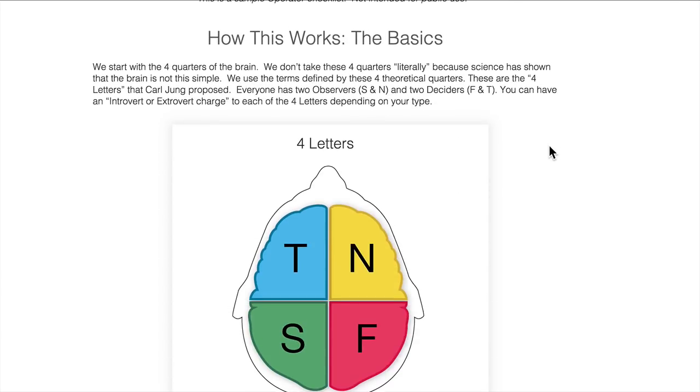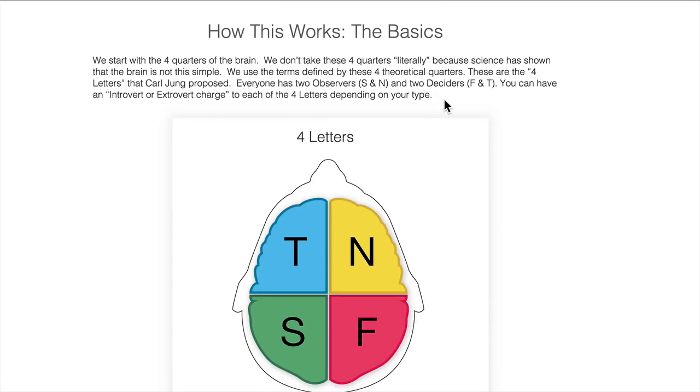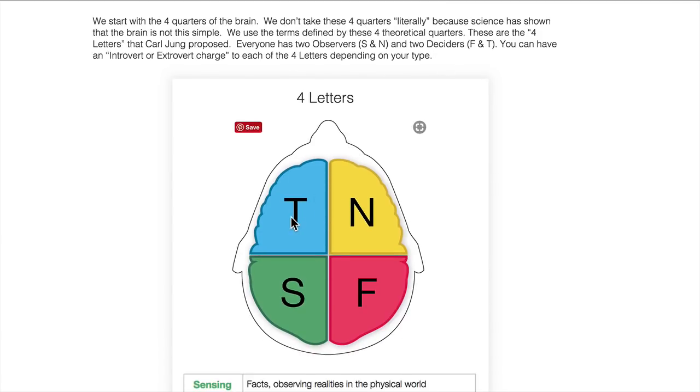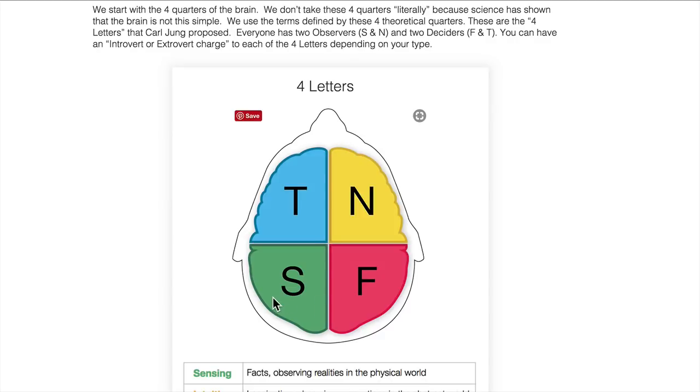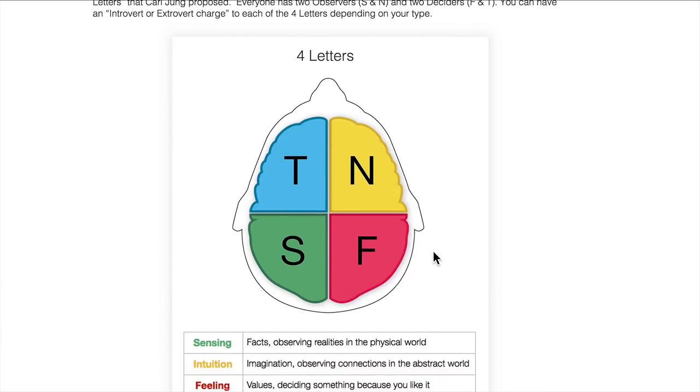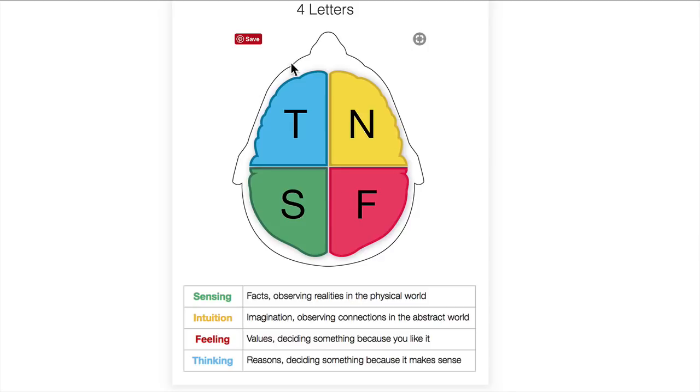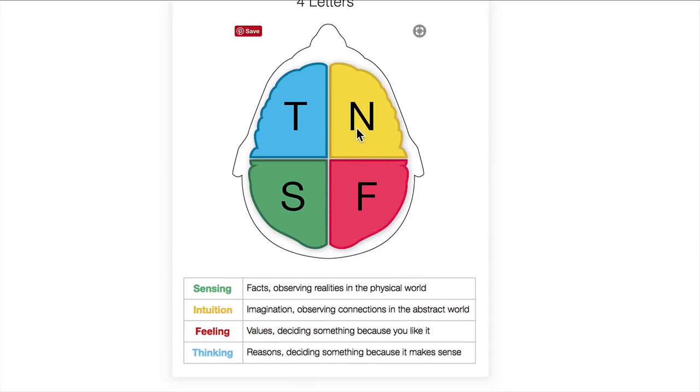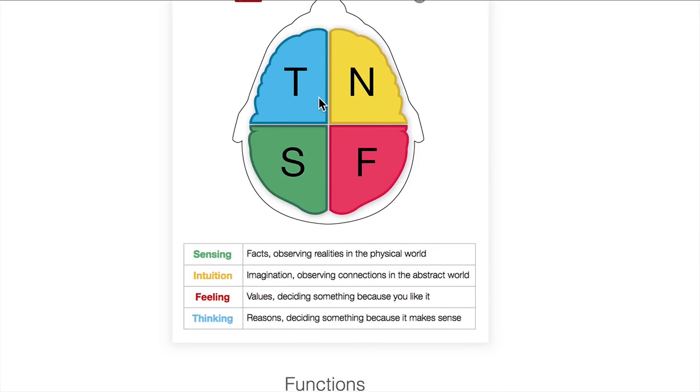The basics of where you're at in Myers-Briggs is starting with these four corners of the brain. Very simple: T, F, S, N. You got the deciders and the observers, the frontal lobe human mind, the animal mind in the back, right side of the brain, left side of the brain. A whole bunch of different ways to look at the brain. I know this is oversimplified, not super scientific, but this is the foundation of the Carl Jung four letters that turn into the eight functions.